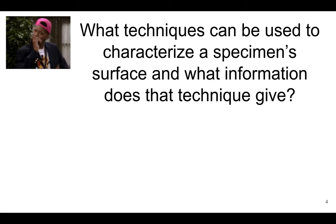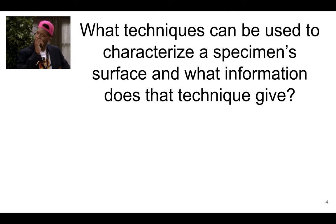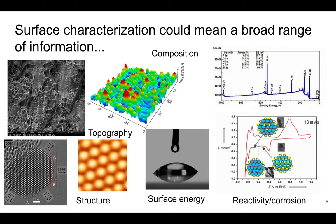Pause the video, go fill that out, and then come back and we will talk about some ideas that we have. Let me give you some of the different characterization types in a broad survey. I might be leaving some stuff out, so don't think that this is all there is, but these are some different types of information that we might want to get when we talk about surface characterization.